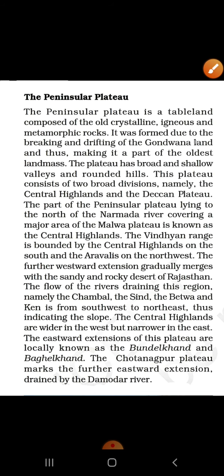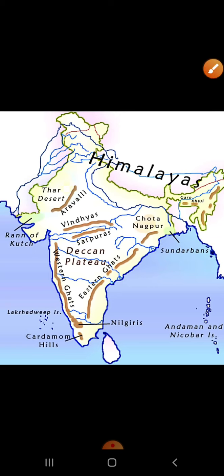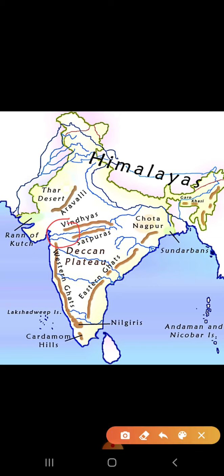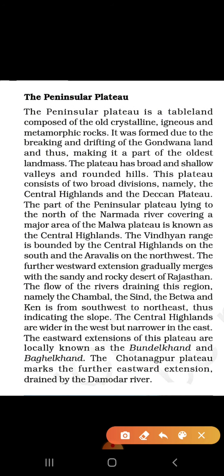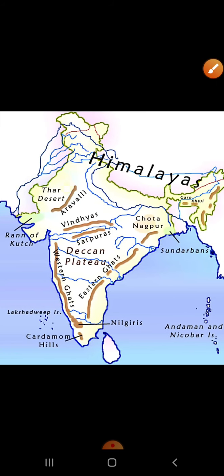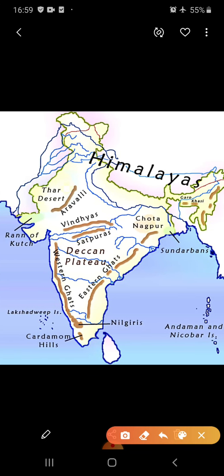An important point here is the direction in which rivers flow. The rivers draining this region — namely the Chambal, Sindh, Betwa, and Ken — flow from southwest to northeast. The Chambal river is a tributary of the Ganga, while the Sindh, Betwa, and Ken are tributaries of the Yamuna river. The Central Highlands are wider in the west but narrower in the east, as visible on the map.